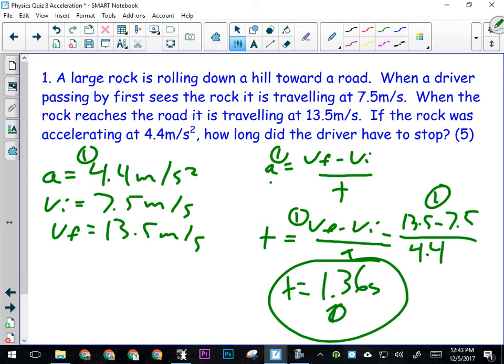Okay, when the rock reaches the road, it's traveling at 13 and a half meters per second. So that's our final velocity. Okay, and it tells us that the rock was accelerating down the hill at 4.4 meters per second squared.